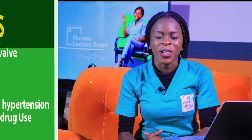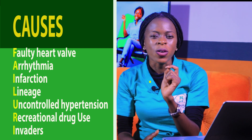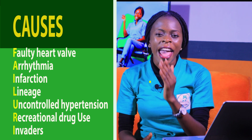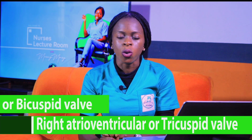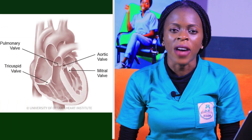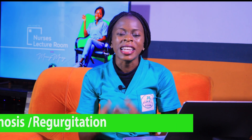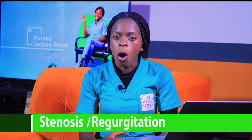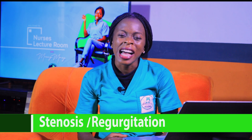To remember the causes of heart failure, remember the word FAILURE. F in FAILURE means faulty heart valves. Remember the heart has four valves: the right atrioventricular valve, the left atrioventricular valve, the aortic valve, and also the pulmonary valve. When there are faulty heart valves, that can result in heart failure. We can have stenosis, which is the narrowing of the heart valve, or regurgitation, which is the leakage of the heart valve. When such occurs, the heart has failed.